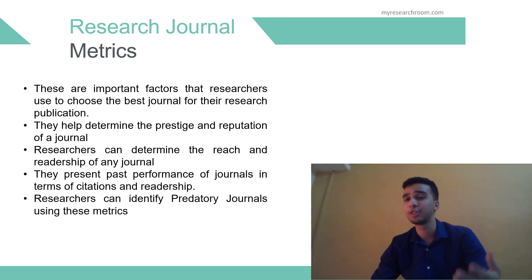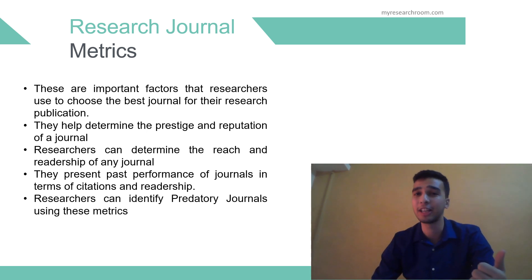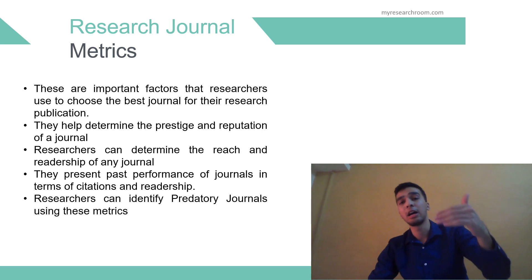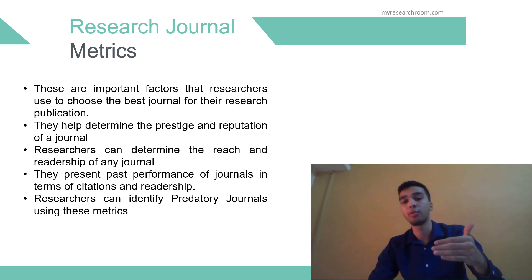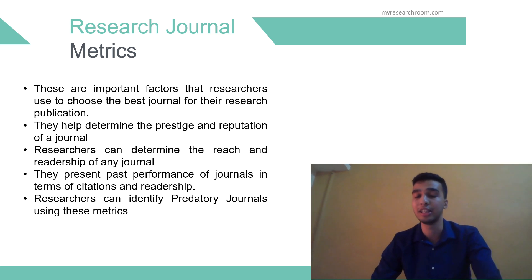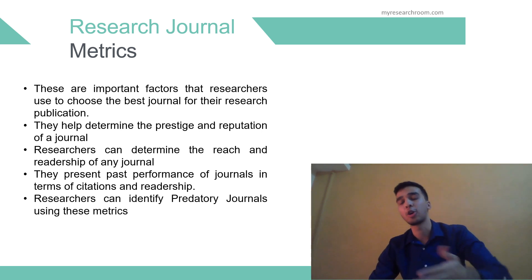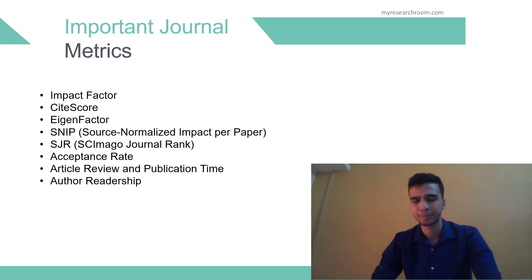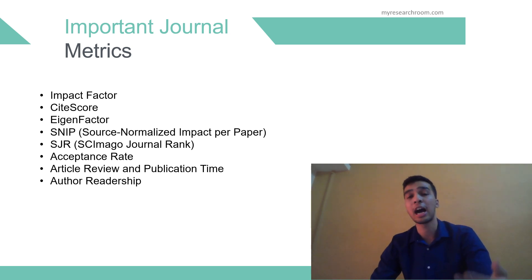Now let's talk about research journal metrics. These are important factors that researchers use to choose the best journal for their research publication. They help determine the prestige and reputation of a journal, and researchers can determine the reach and readership of any journal. These metrics present past performance of journals in terms of citations and readership. Researchers can also identify predatory journals using these metrics. Some of the most important research metrics are: impact factor, CiteScore, Eigenfactor, SNIP, SJR, acceptance rate, article review and publication time, and author readership.